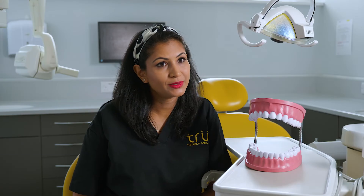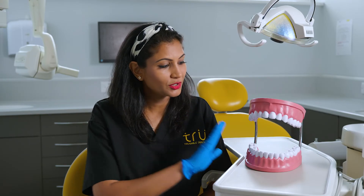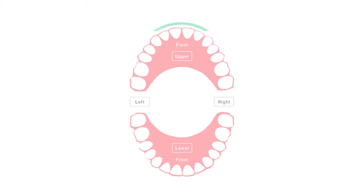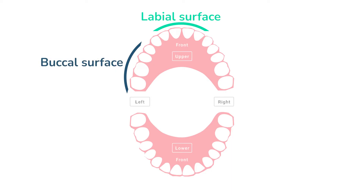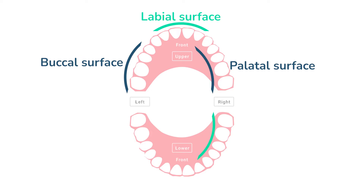Each tooth is split into different tooth surfaces. The outside of the front teeth are called labial surfaces — these are the surfaces closest to the lips. On the back teeth, the ones closest to the cheeks are called the buccal surfaces. On the inside, the ones closest to the palate are called your palatal surfaces, and for the lower teeth, the surfaces closest to the tongue are called the lingual surfaces.